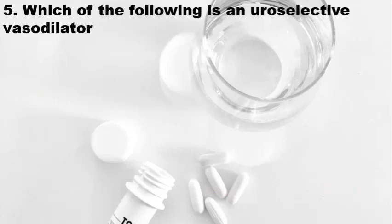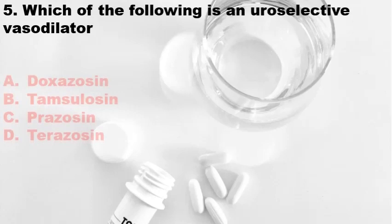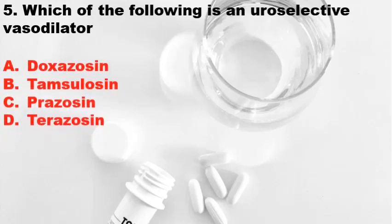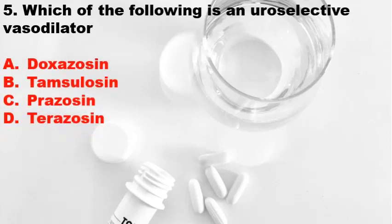Fifth question: Uroselective vasodilator — Option A: Doxazosin, Option B: Tamsulosin, Option C: Prazosin, Option D: Terazosin. The correct answer is Option B, Tamsulosin.